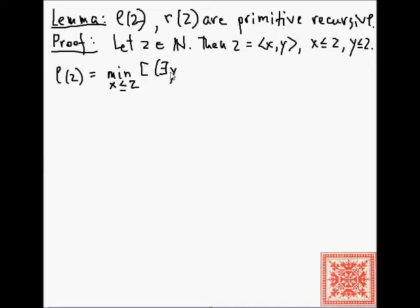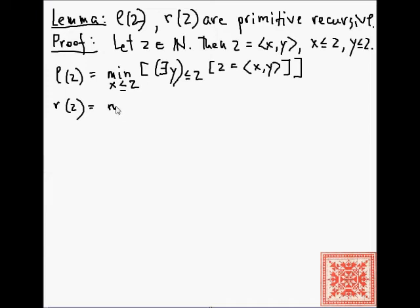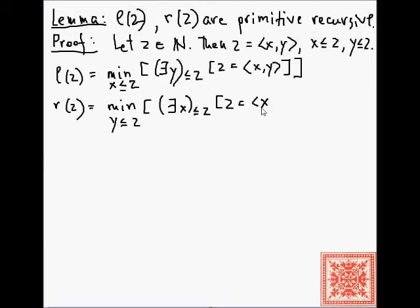Then L(z) can be defined as the bounded minimalization of x ≤ z of the predicate: there exists a y, bounded by y ≤ z, such that z equals the pair of x and y — so this is the minimal such x. And R(z) can be similarly defined through bounded minimalization: it is the bounded minimalization of y ≤ z such that there exists an x ≤ z such that z equals the pair of x and y.